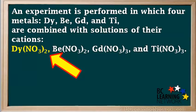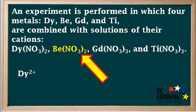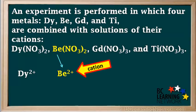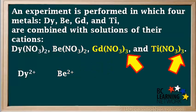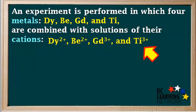Nitrate is NO3 with a minus one charge. DY(NO3)2 has two nitrates, so its cation is DY2+. BE(NO3)2 also has two nitrates, so its cation is BE2+. GD(NO3)3 and TI(NO3)3 both have three nitrates, so their cations are GD3+ and TI3+, respectively. So in reality, we're just combining each metal with each of these cations.